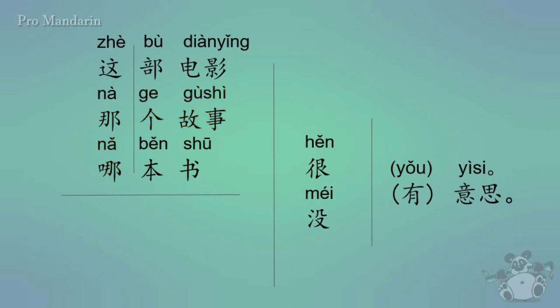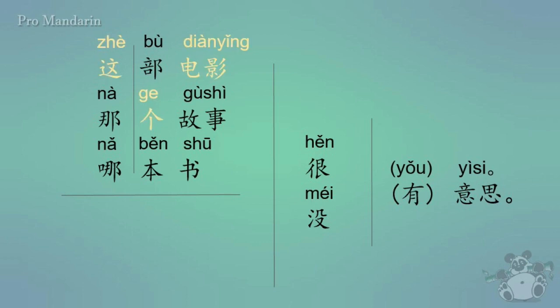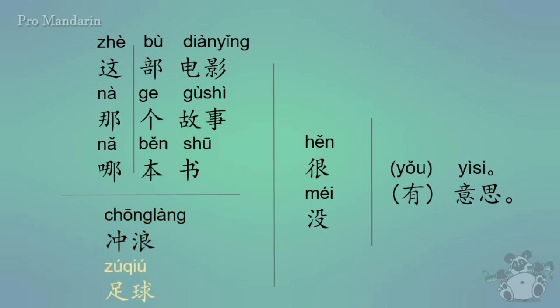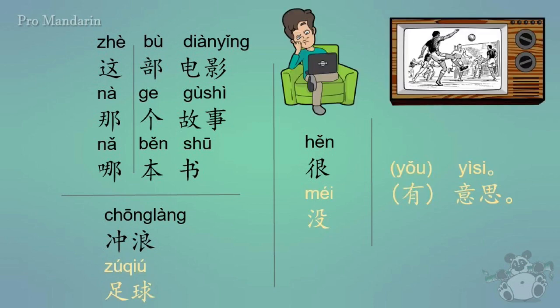Now, why did I say that gè is the default? Well, if you didn't know the appropriate classifier for the noun you're using, you can always just use gè. For example, 这个电影, even though the correct way is 这部电影. With that, we'll move on to the last two pieces of vocabulary. The first one is chōnglàng, which means both 'to surf' as a verb, and 'surfing' as a noun. And the last one is zúqiú, which is 'soccer'. For example, 'soccer is boring' — you'd say 足球没有意思 or 足球没意思.